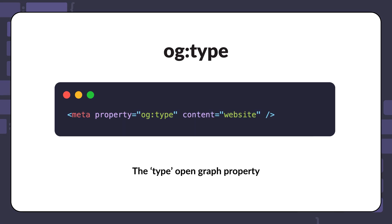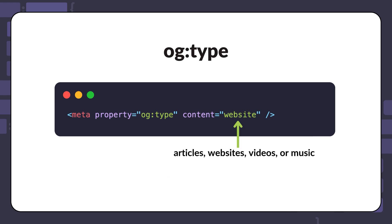The next important OG property would be the type. Here is an example of using the OG type for the freeCodeCamp homepage. The type property is used to represent the type of content being shared on social media. Examples of this content include articles, websites, videos, or music.